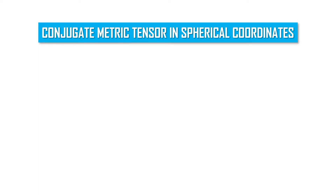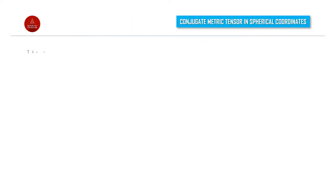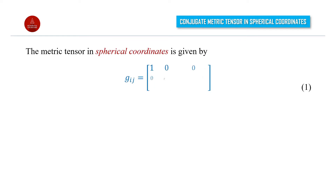Conjugate metric tensor in spherical coordinates. The metric tensor in spherical coordinates is given by gij equal to the diagonal matrix: 1, 0, 0; 0, r square, 0; 0, 0, r square sin square theta.